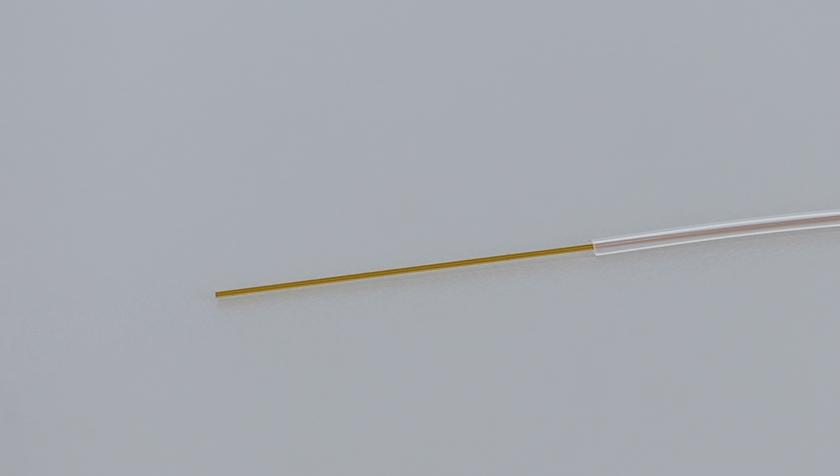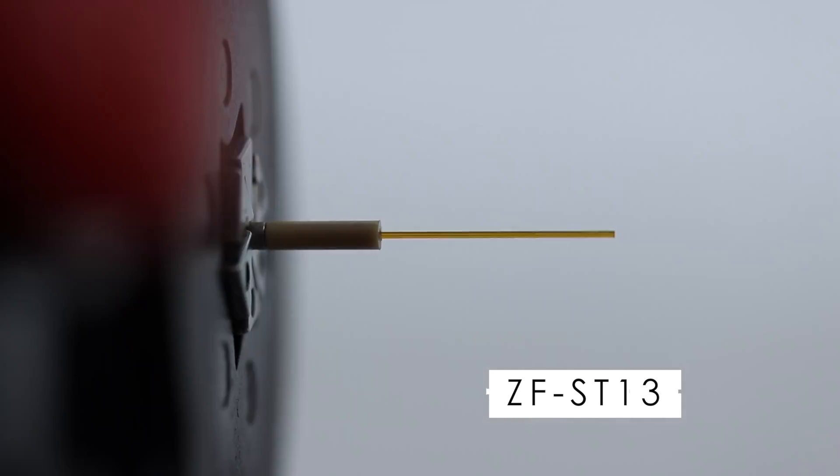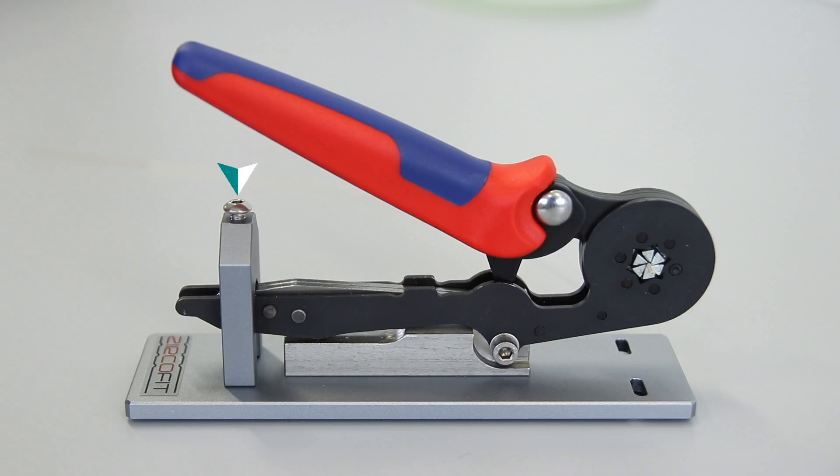After combining the tubing and the capillary, install the ZF-ST13 sleeve on one end and place it on the crimping tool. After pushing the fused silica into the sleeve, use the crimping tool.